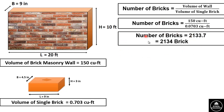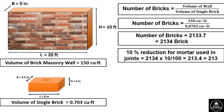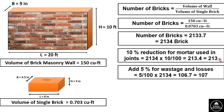We have calculated bricks for dry masonry, but in actual masonry, mortar is also used in joints between bricks. To account for this, a 10% reduction is applied for mortar used in joints. 10% of 2134 = 213.4, or approximately 213 bricks.